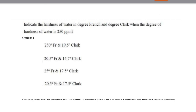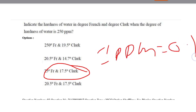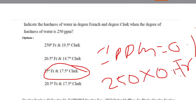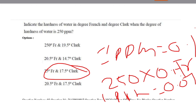Next question: indicate the hardness of water in degrees French and degrees Clark when the hardness is 250 ppm. The options included 25 degrees French and 17.5 degrees Clark as option 3. Since 1 ppm = 0.1 degrees French, 250 × 0.1 = 25 degrees French. And since 1 ppm = 0.07 degrees Clark, 250 × 0.07 = 17.5 degrees Clark. So option 3 is correct.